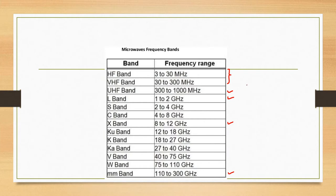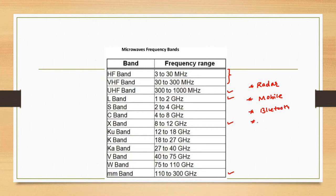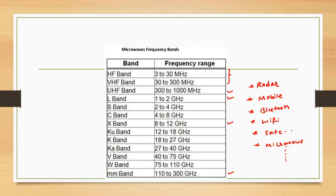Microwave signals have numerous applications including radar, data communications, mobile communication, Bluetooth, Wi-Fi, satellite communications, and very importantly, microwave ovens. We can list hundreds and thousands of applications for microwave frequencies. That is why in this particular experiment we are going to study the generation of microwave signals, propagation through waveguide and other components, and measurement of different parameters of the generated microwave signal.